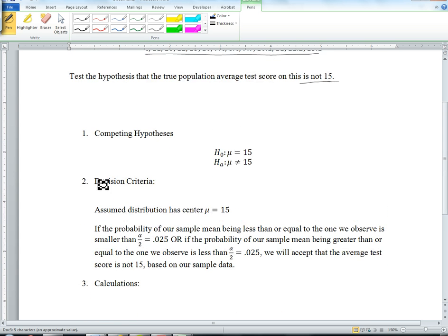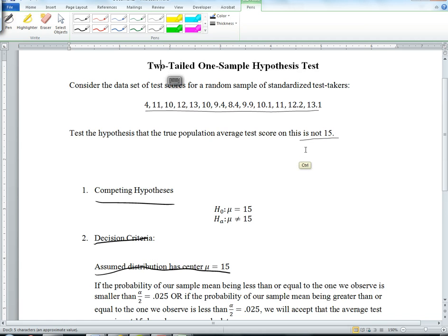Our decision criteria, our second step, is to first of all assume our distribution has center mu equals 15. We assume that the null hypothesis is true, and then we'll see if we have evidence to disprove that.